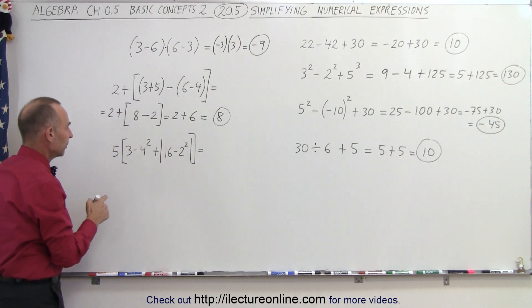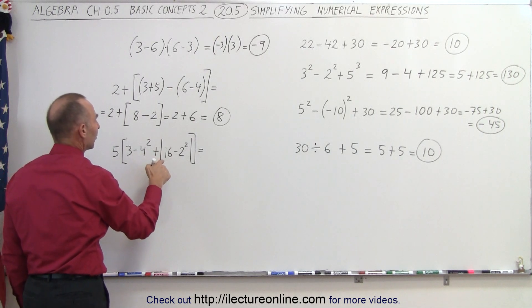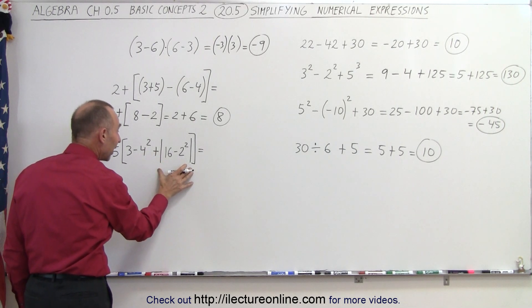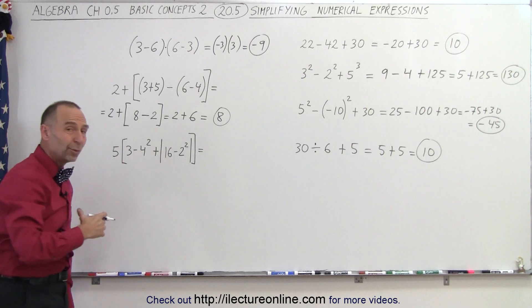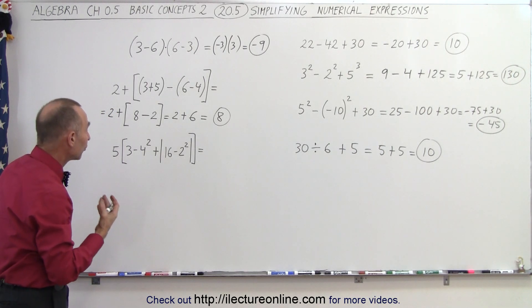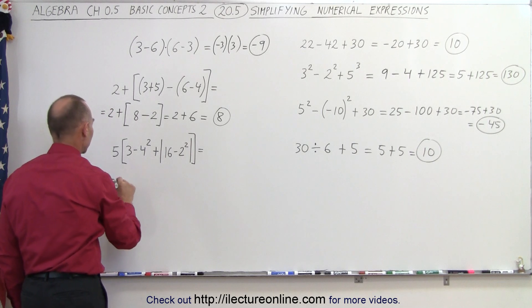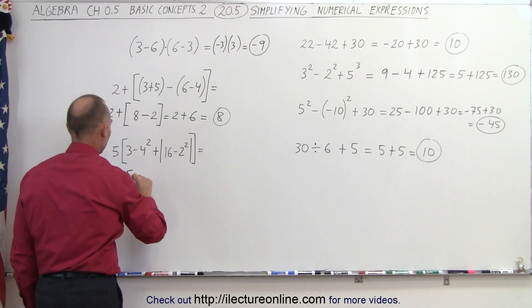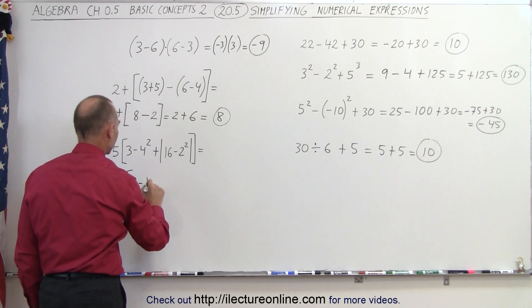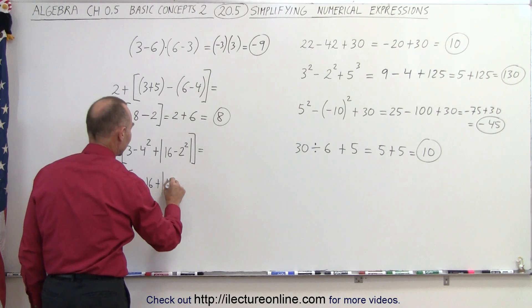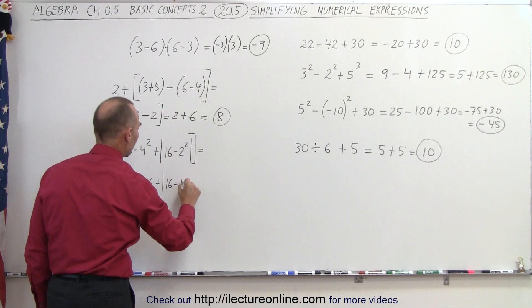And finally, the one down here, we have exponents, brackets, and absolute value signs. So we need to start with doing the exponents first, because they're inside the brackets. So this can be written as 5 times 3 minus 4², which is 16, plus absolute value signs of 16 minus 2², which is 4.